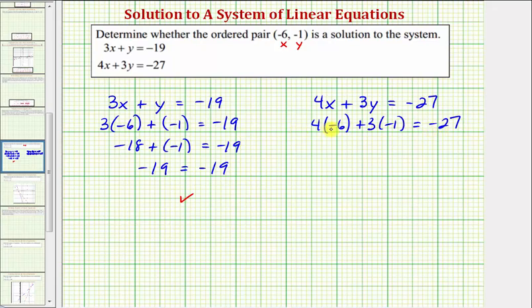Simplifying, four times negative six equals negative 24. So negative 24 plus three times negative one is equal to negative three.